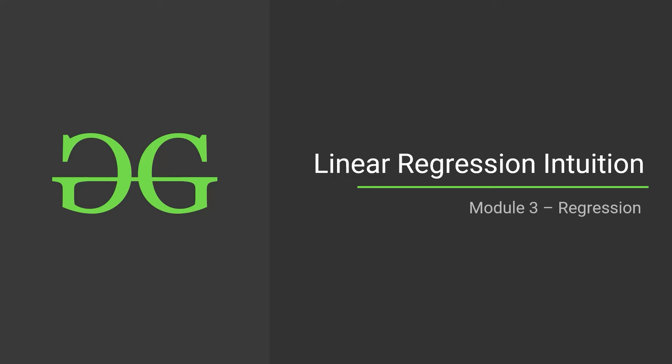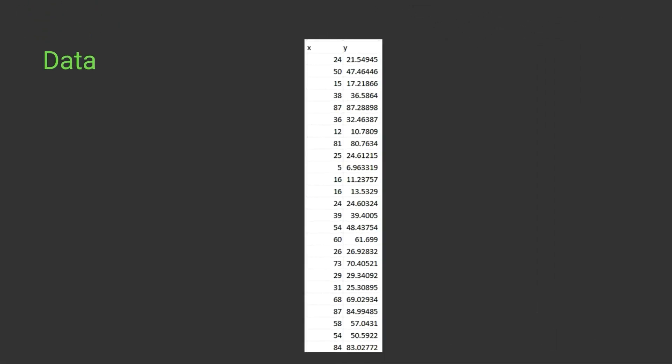Suppose we are given data x and y, where x is the input value and y is the output value. For example, x could be the experience of an employee and y is the corresponding salary. Let's take an example where we have only two parameters: one input and one output. We feed this data to our linear regression model and it will predict the y value based on the x value.